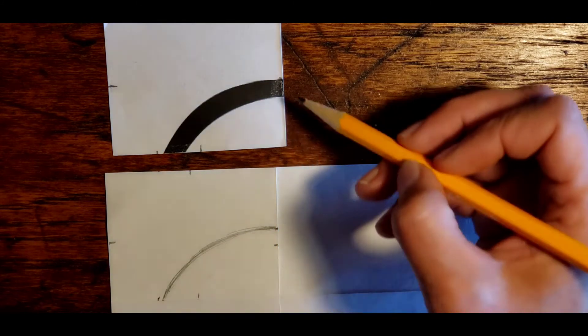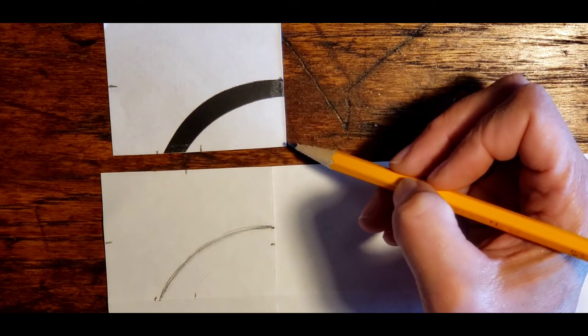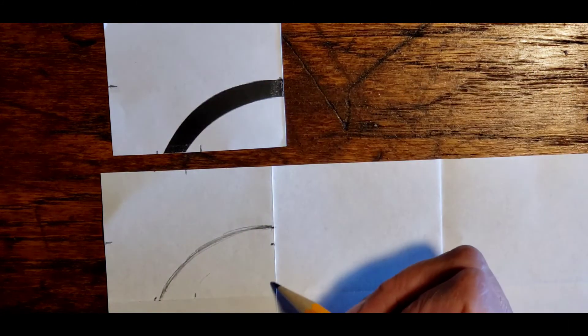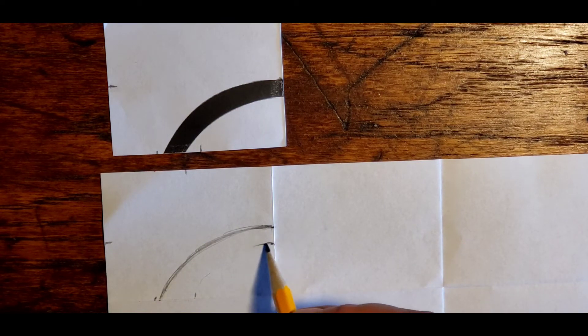And even as I'm drawing it, I'm looking at the distance from that line to the bottom, to that corner. And I want to make sure that that is relatively similar.